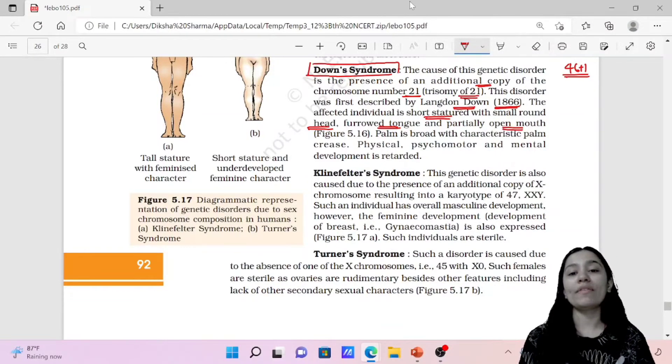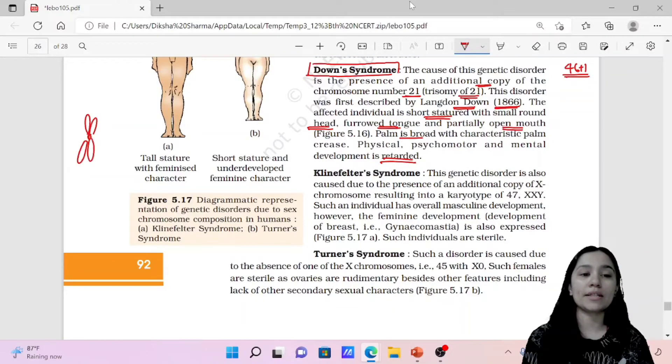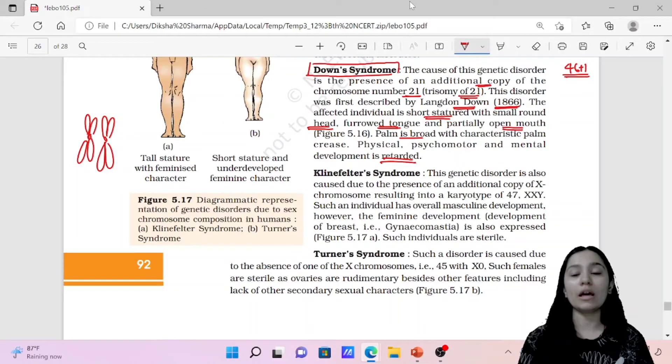That's why they are not able to speak properly, they are not able to open their mouth properly. Palm is broad, and physical and psychomotor and mental development is retarded. So they are not mentally developed, they are not physically developed, psychomotor development is not developed. Down syndrome is called trisomy 21. It happened because of addition of additional number of chromosome in the chromosome number 21. So there, three chromosomes are present. Our chromosomes stay in pairs, but here three chromosomes instead of two, that's why we call it trisomy.